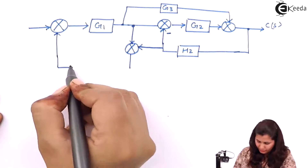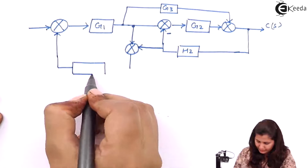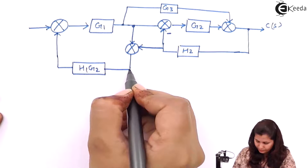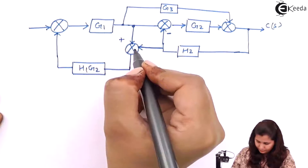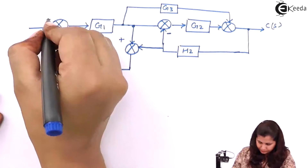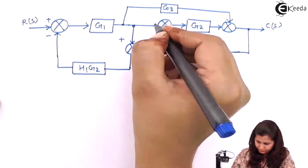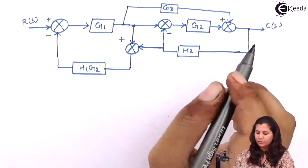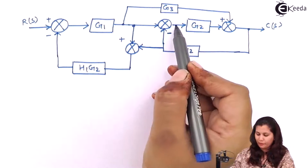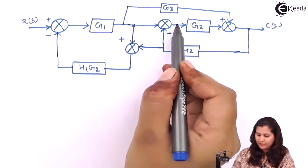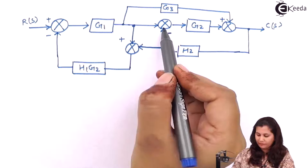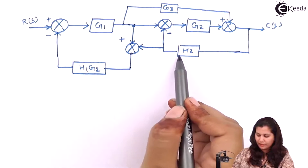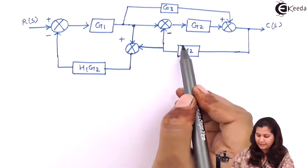Here we were having H1 and G2, so they are multiplied — this is H1·G2. So we have shifted the takeoff point from here to before the summing point, and we have introduced another summing point here having H2 as its input.